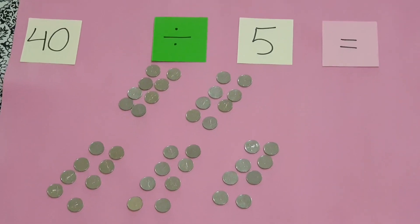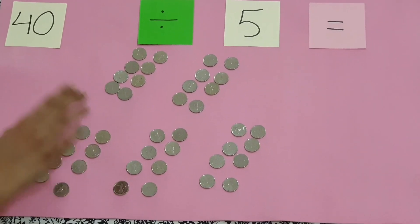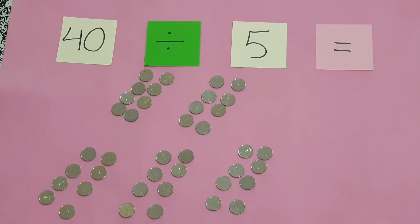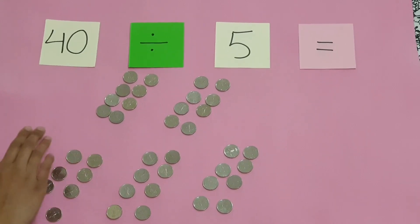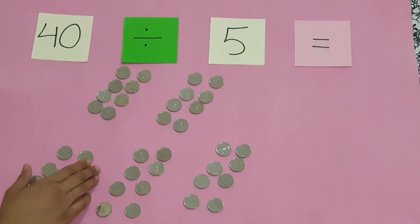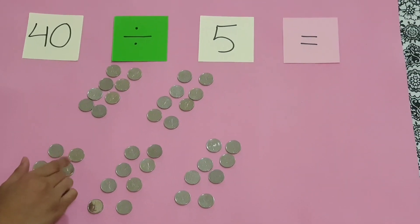So you can see that if we divide 40 into five equal groups we get the answer as eight. I want you to do this activity with any item, any object found from your house and divide them into five groups.